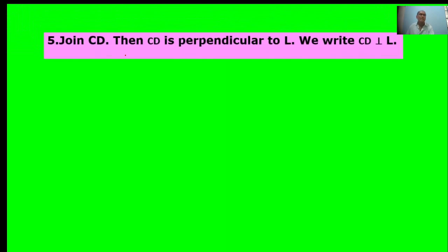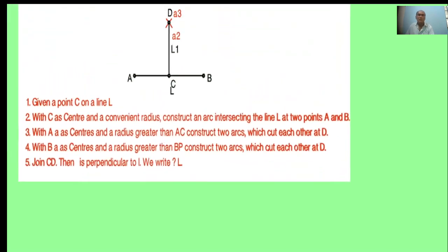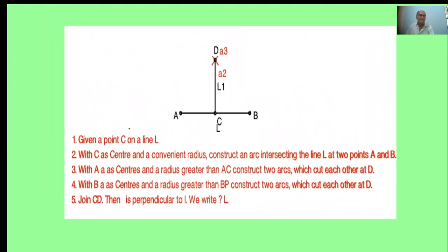Join CD. Then CD is perpendicular to L. We write CD is perpendicular to L. The perpendicular line is constructed in five steps.